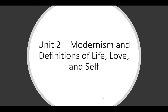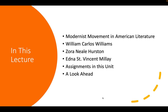Hey folks, and welcome back to American Lit. In unit two, we're going to be talking about modernism and also looking at how some authors define things like life, love, and self. In this lecture video, we're going to be talking about the modernist movement in American literature, as well as the authors William Carlos Williams, Zora Neale Hurston, and Edna St. Vincent Millay. We'll also look at what assignments are due in this unit and look ahead to see if there's anything you need to be aware of.